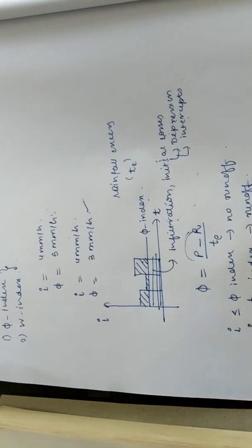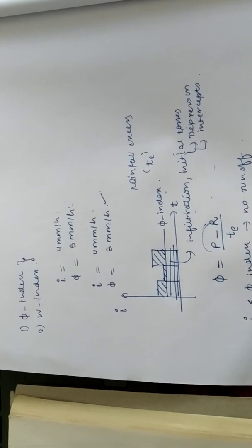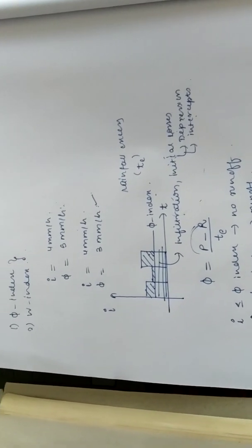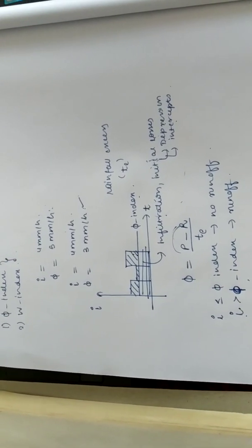For phi index or for runoff to occur, intensity of rainfall should always be greater than phi index. This is the concept. With the help of numericals, it will be even more clear.